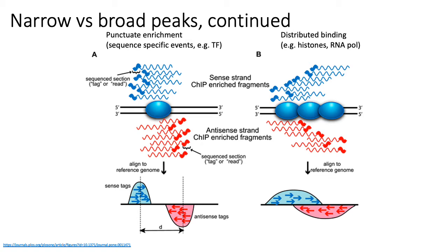On the other hand, if you run a ChIP-seq assay on a repressive epigenetic mark, those marks generally occur in regions that are also dense in nucleosomes. Because fragmentation tends to happen in more accessible regions of the genome, fragmentation occurs less often between packed nucleosomes. So if you have a region with, say, three packed nucleosomes, fragmentation happens more frequently outside that region, meaning your forward and reverse reads are distributed more broadly across the repressed region, resulting in broader peaks.